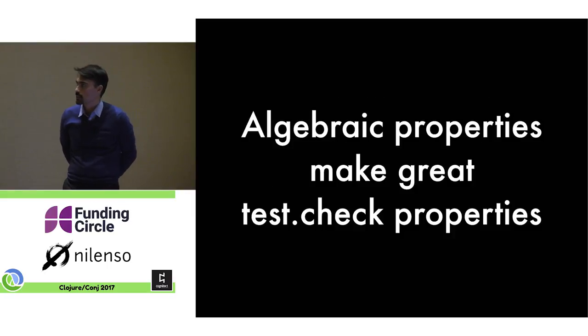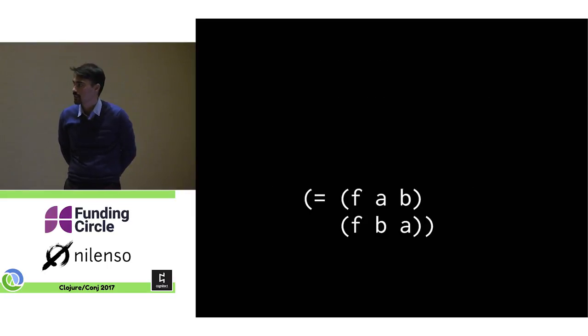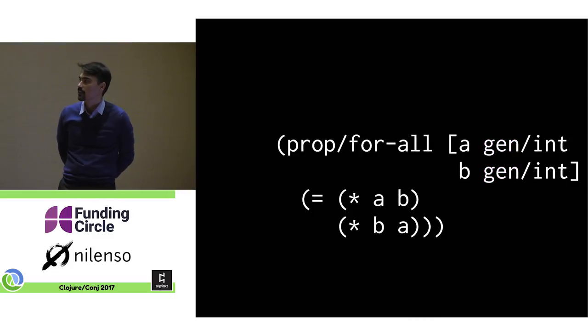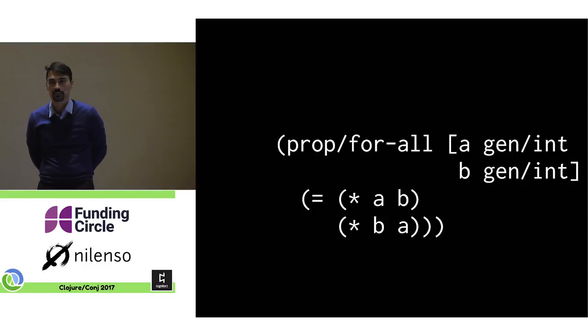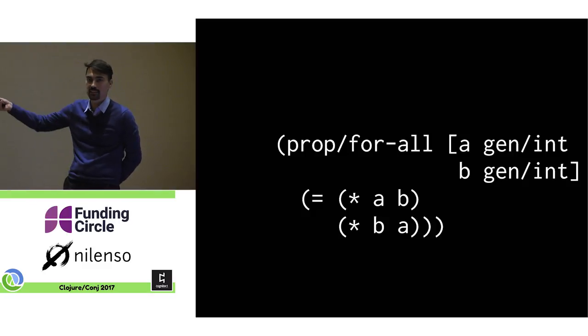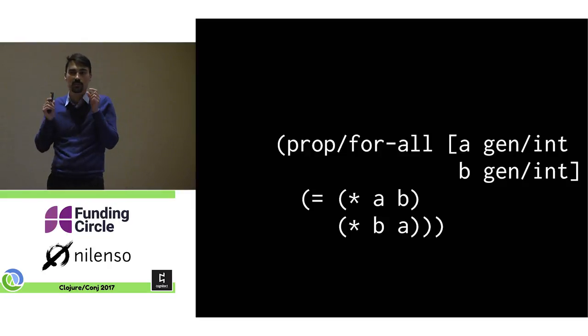I talked about this. Algebraic properties make great test check properties. I think I already mentioned this. So we can test, as an example, the commutative property of multiplication really easily. It's just this. It's great. I love test check. And people always wonder like, well, where, how do you figure out what properties to actually test? Well, you just come up with this little identity, this little equality, and there you are. You have something to test. Something from the thing you're modeling. That's it. It's my talk.